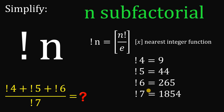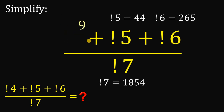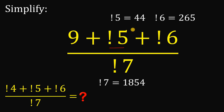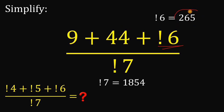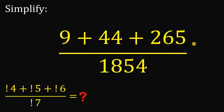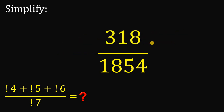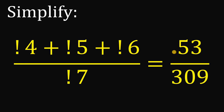Using those values, we can now evaluate the expression. We have 4 sub-factorial = 9, 5 sub-factorial = 44, 6 sub-factorial = 265, and 7 sub-factorial = 1854. Simplifying: 9 plus 9 plus 44 plus 265 gives 318. Reducing to lowest terms, we get 53 over 309. Therefore, our answer to this challenge question is 53 over 309. And as always, we are done.